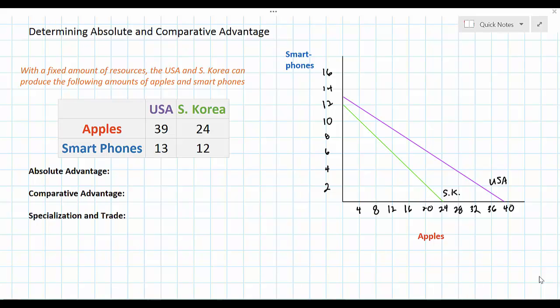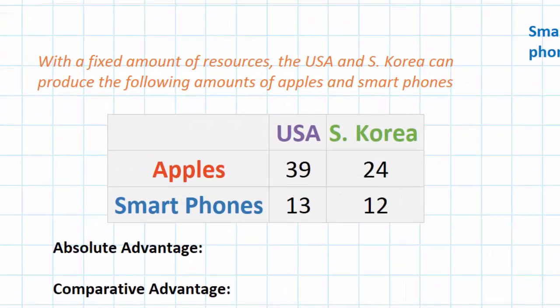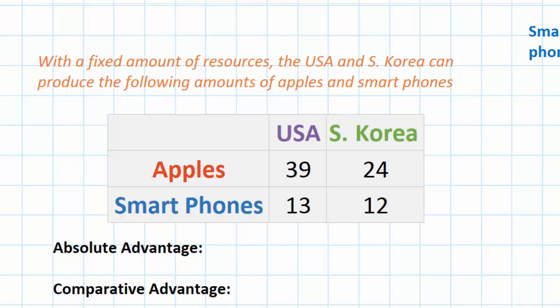The production possibilities of the United States and South Korea are demonstrated in this production possibilities table. With a fixed amount of resources, the USA can produce 39 apples or 13 smartphones, and South Korea can produce 24 apples or 12 smartphones. The US cannot produce both 39 apples and 13 smartphones simultaneously since resources are scarce, and similarly South Korea cannot produce both 24 apples and 12 smartphones at once.